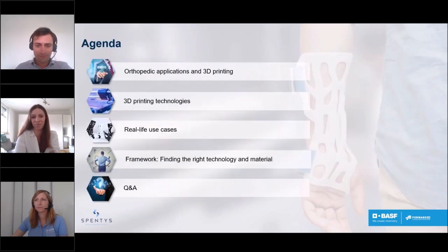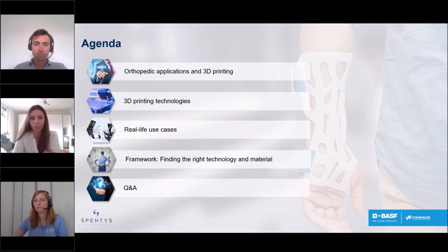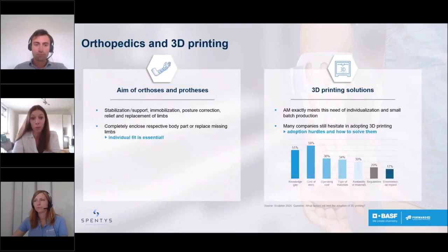Let's have a quick look at today's agenda. To start off, I'll give a short summary of orthopedic applications and how 3D printing can be implemented in this field. We'll then briefly look at the different 3D printing technologies and the pros and cons of each. After that, Benoit will walk you through three real-life use cases of 3D printed orthopedic applications and present a framework on how to find the right material and technology. Last but not least, we'll answer all your open questions.